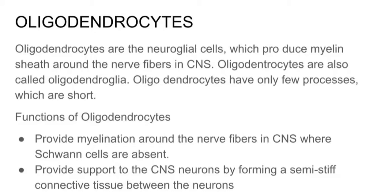Functions of Oligodendrocytes: Provide myelination around the nerve fibers in the CNS where Schwann cells are absent. Provide support to the CNS neurons by forming a semi-solid connective tissue between the neurons.